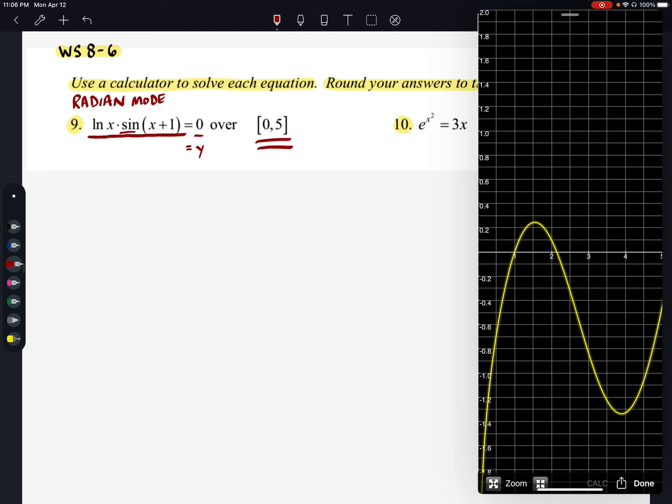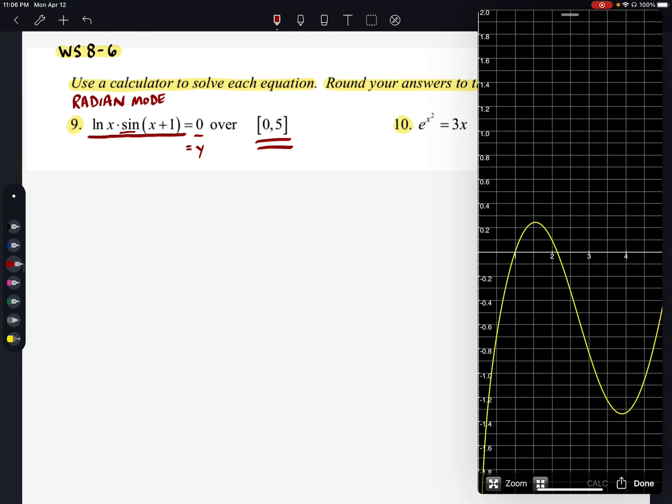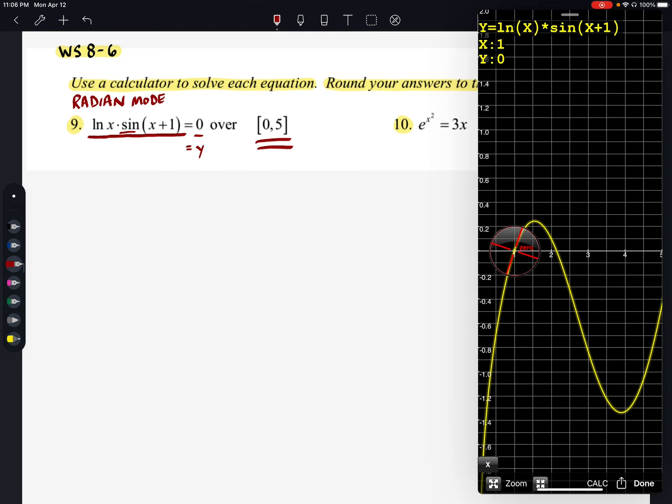So you'll see here that looks like we're going to have two places where it's crossing the X axis. Looks like one of them is that one. And the other one is at 2.1415. So 2.142 if we're rounding to the nearest thousandth.